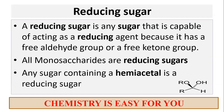A reducing sugar is any sugar that is capable of acting as a reducing agent because it has a free aldehyde group or free ketone group. All the monosaccharides are reducing sugars and any sugar that contains a hemiacetal group is a reducing sugar. The sugar which has a free ketone or aldehyde group is a reducing sugar, and all monosaccharides are reducing sugars.